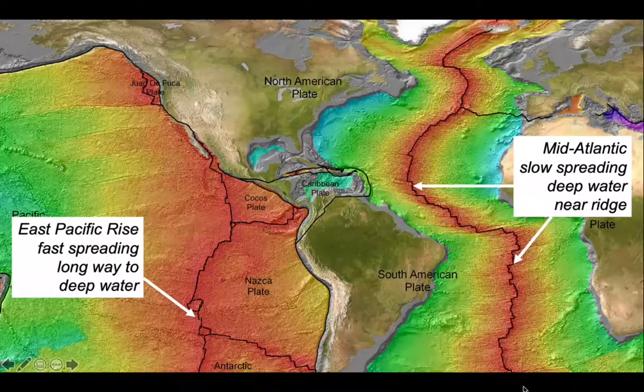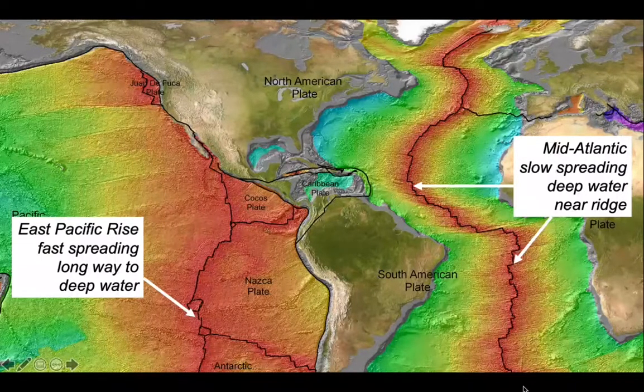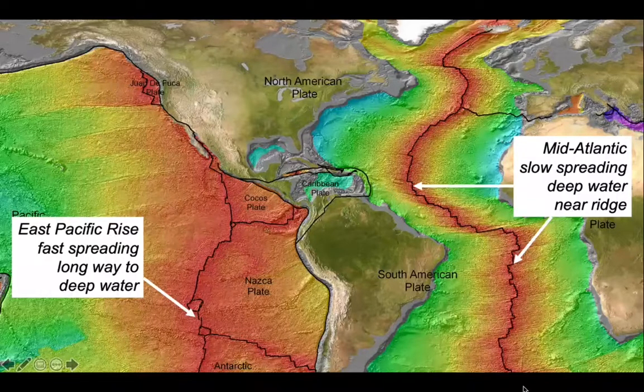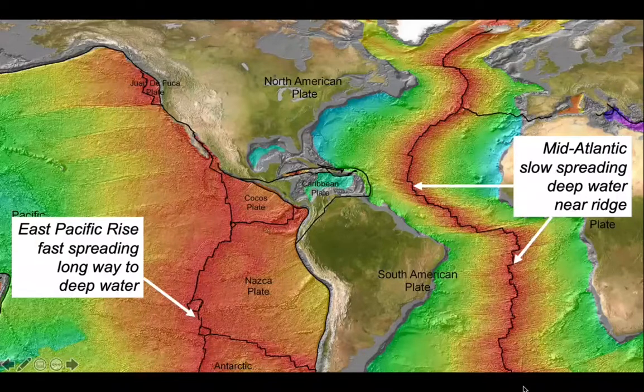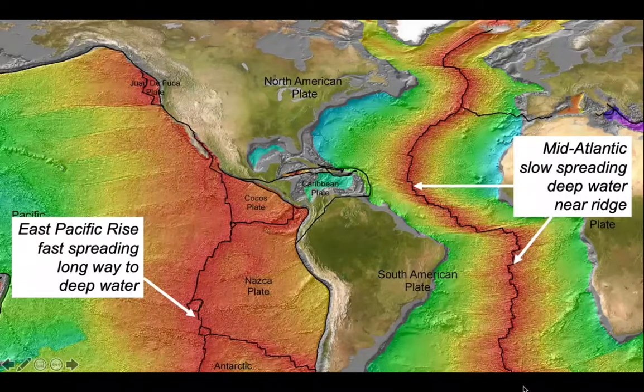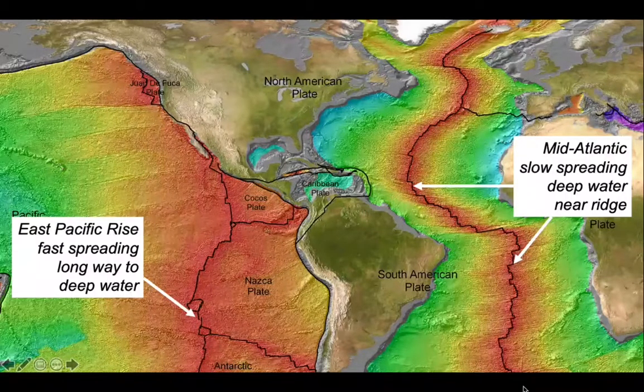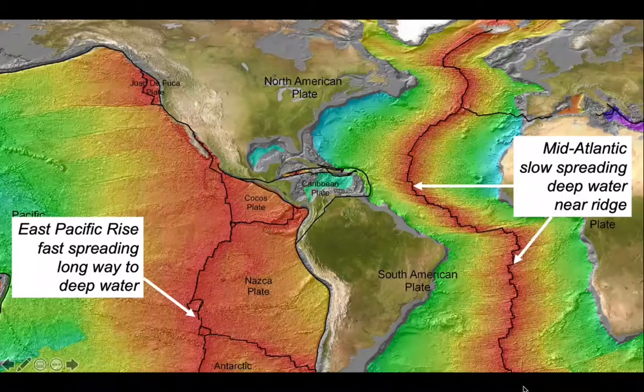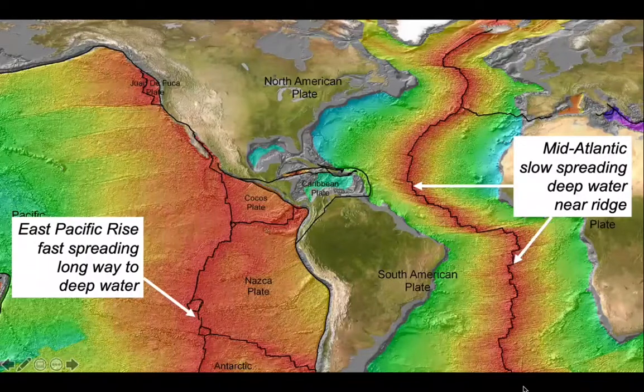In contrast, the East Pacific rise is a fast spreading ridge system. The oceanic crust moves a long way off the ridge in a relatively short time, as does its underlying mantle. Therefore, this subsidence process happens further away from the ridge for fast spreading systems.